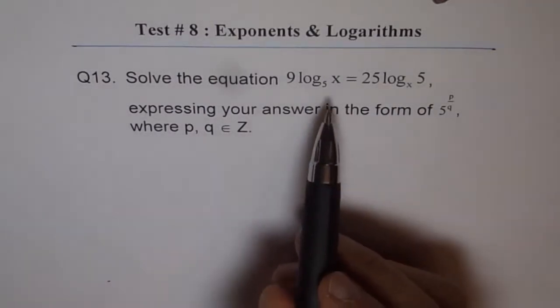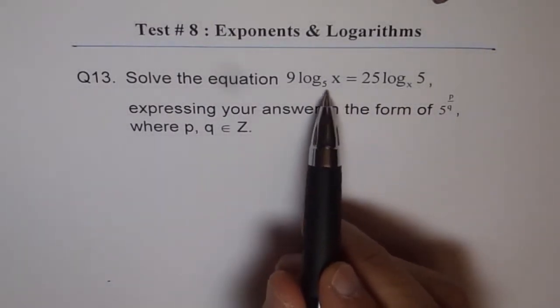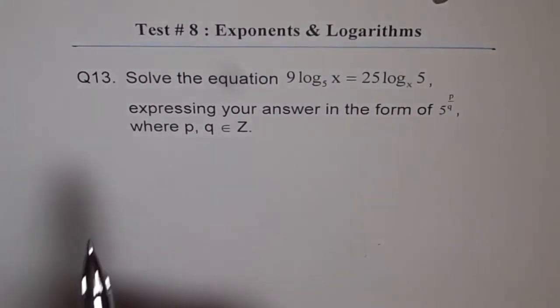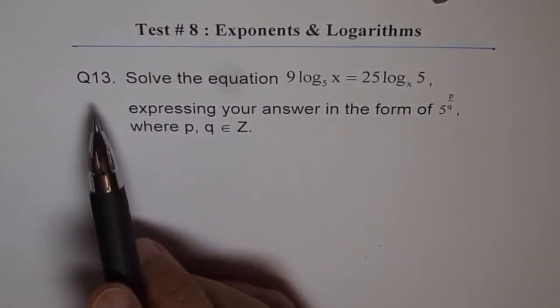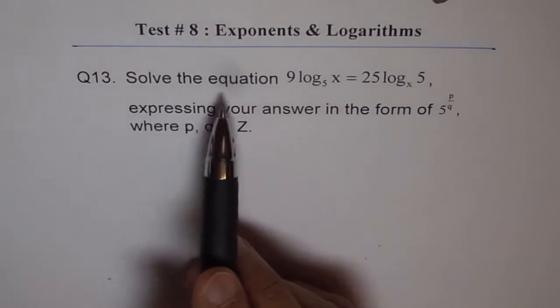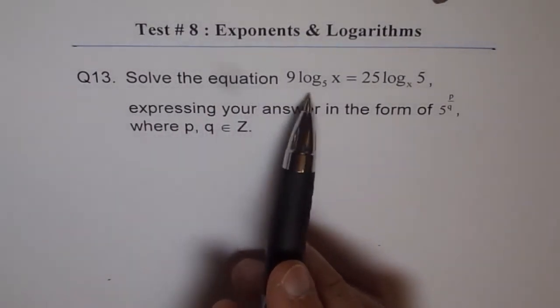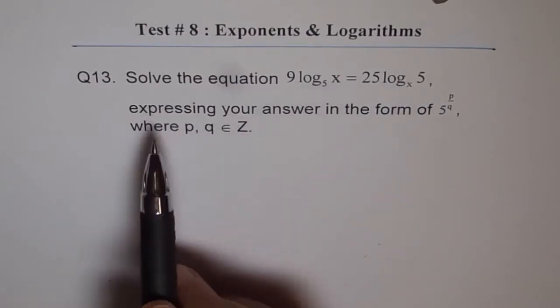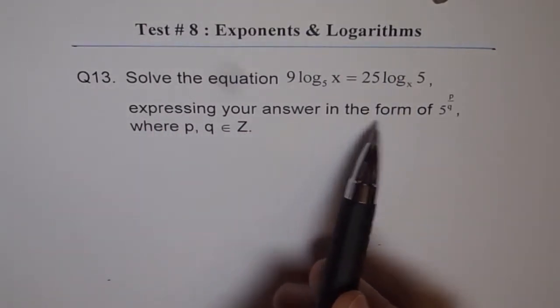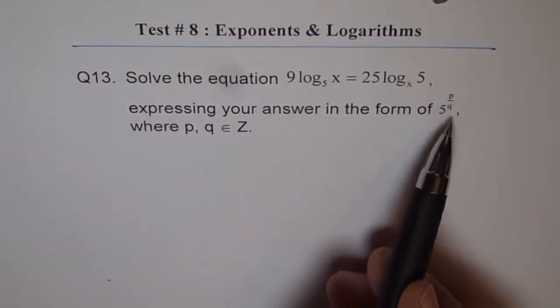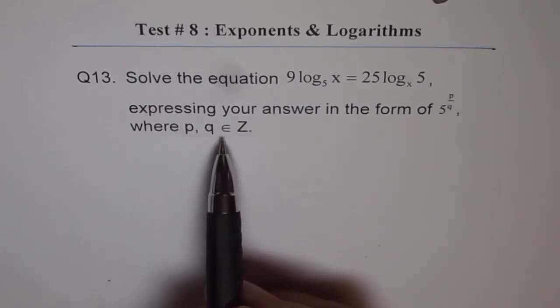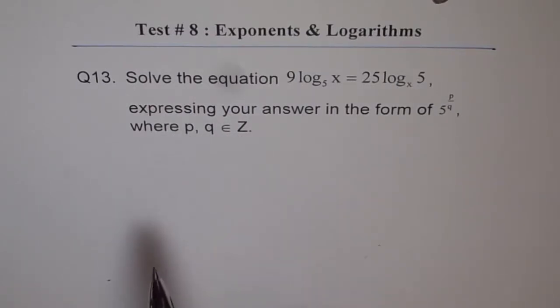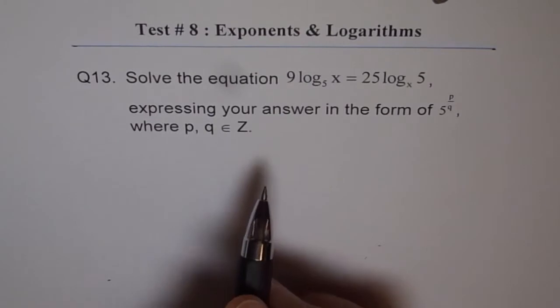Well, we see that we don't have same base. That is important to note. Now, let's read the question again. Question 13. Solve the equation 9 log 5 of x equals 25 log x of 5, expressing your answer in the form of 5 to the power of p over q, where p, q belongs to integers. That's the question. Let's try to solve this.